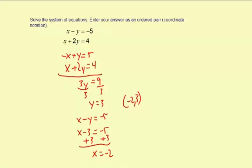Second equation, negative 2 for x, and then 3 for y. So negative 2 plus 2 times 3, which is 6. Negative 2 plus 6 is 4. So this works in both equations, and you know you have the right solution.